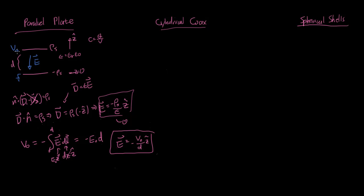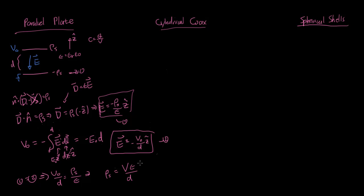So E equals V naught over D in the minus Z-hat direction. You can arrive at this intuitively using the elevation analogy — if the potential rises from 0 to V naught over a distance D, the slope is V naught over D, and the negative Z direction reflects that the field points from positive to negative. Call that equation 2. Setting equation 1 equal to equation 2, we get rho_s over epsilon equals V naught over D, which means the surface charge density rho_s equals V epsilon over D.